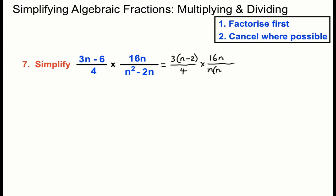We've got 16n over and we can take an n out of the bottom there. What do we need to multiply n by to get n squared? We need another n and we need another minus 2 there. And I think you can spot that there's some more cancelling opportunities here.